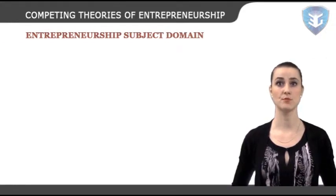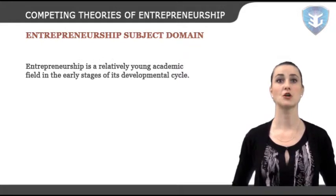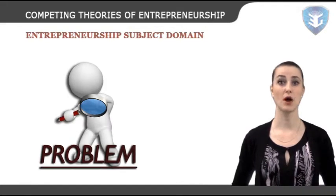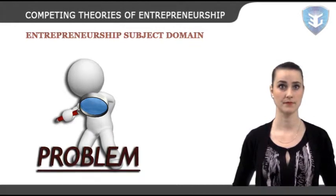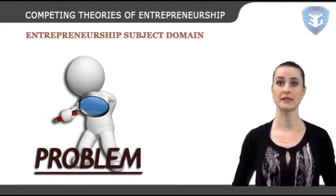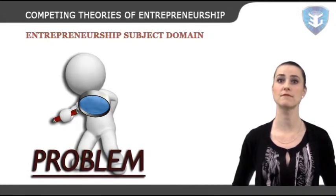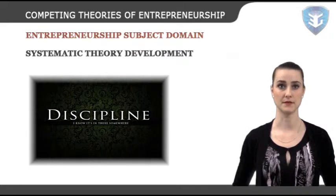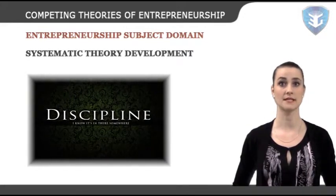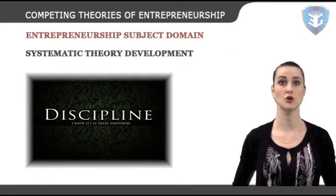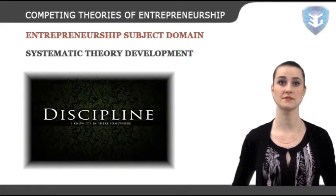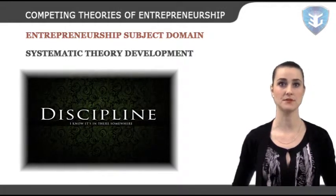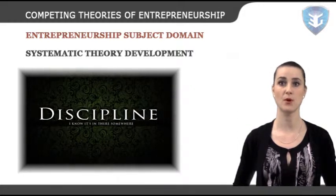Now we shall understand the entrepreneurship subject domain. Entrepreneurship is a relatively young academic field in the early stages of its development cycle, which creates problems in defining the field and the scope of its research. Plaschka and Welsh argue that the development of entrepreneurship as a discipline went through four fundamental phases before it was acknowledged as an acceptable academic subject: systematic theory development, consensus surrounding an acceptable definition, the acceptance that entrepreneurs can be trained, the movement towards more sophisticated research methods and statistical techniques, and a move towards the usage of bigger samples.